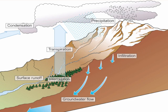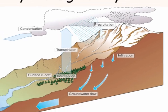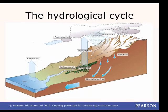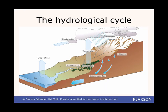Some falls back into the sea, some onto the land. When precipitation falls onto the land, the water starts its journey back to the sea again in a process called runoff. Overland flow or surface runoff is when the water runs over the surface of the ground until it reaches a stream, river, or the sea itself.